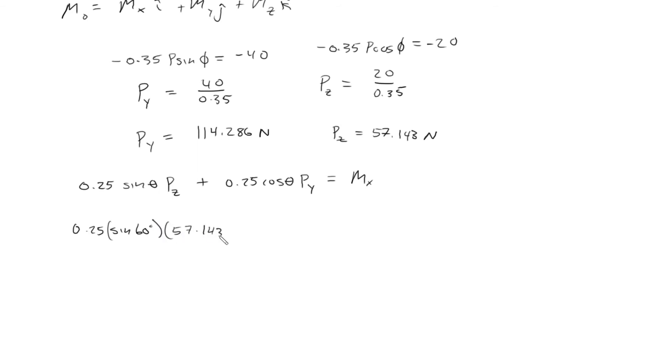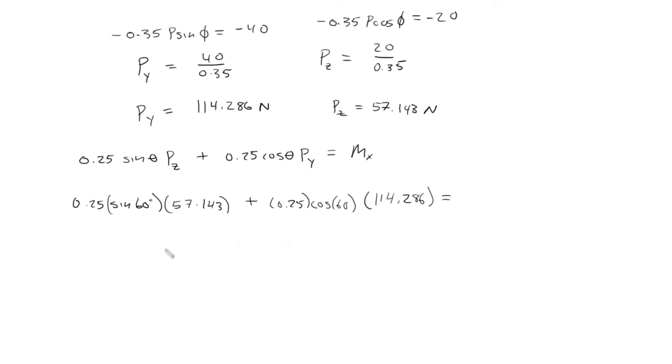Plus 0.25 times the cosine of 60 and then we can multiply that by Py, so 114.286. And after we plug this into our calculator what we get is that the moment about the x-axis is simply 26.658 newton meters.